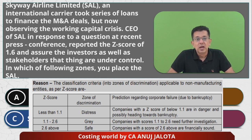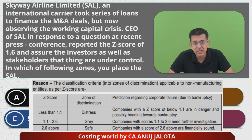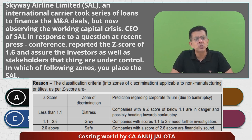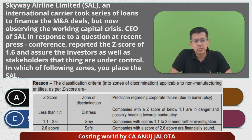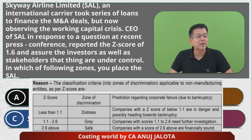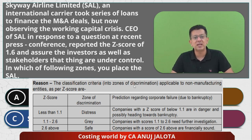How to apply the Z score depends upon the type of company. SAL is not a manufacturing company — it is an airline company. For a non-manufacturing airline company, the criteria are: if your score is less than 1.1, you are in distress, meaning you are almost heading towards bankruptcy if strong steps are not taken. If your score is between 1.1 and 2.6, you are in the grey area — neither too strong nor too weak, requiring further investigation. If your score is above 2.6, you are in the safe zone.